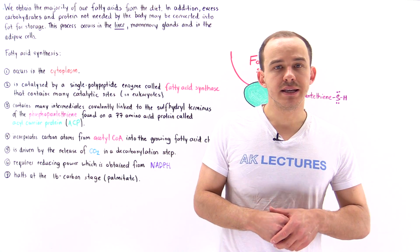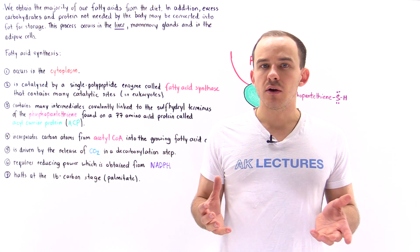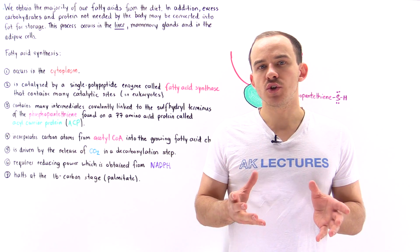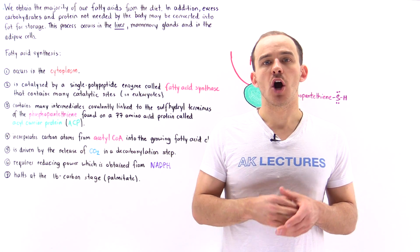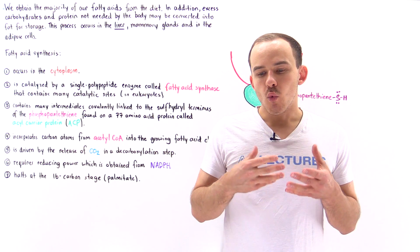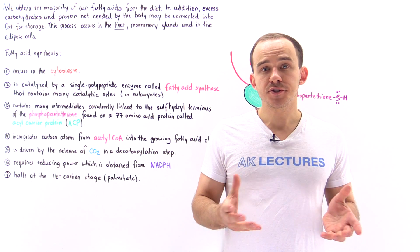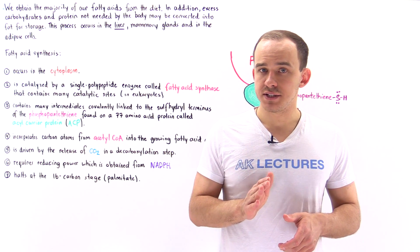We know that the cells of our body need to use ATP to actually carry out many different types of cell processes. One source of these ATP molecules are fatty acids. Now, where do the cells of our body actually obtain these fatty acids in the first place? Well, the answer is simple, from our diets.